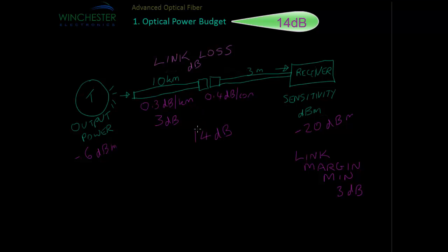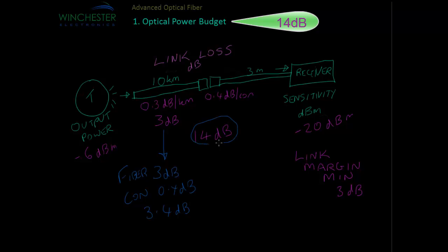We'll work out our total link loss: 3 dB for the fibre, and then for the connectors we only have one, it's 0.4 dB. So the total is 3.4 dB of link loss, and our allowable link loss, which was our power budget, is 14 dB. So we can calculate how much extra we have over and above what we actually need: 14 minus 3.4, that is 11.6 dB.